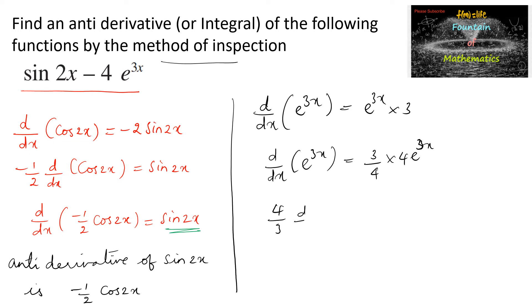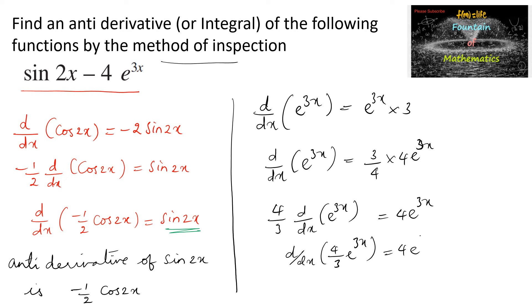So 4 by 3 times d/dx of e^(3x) is equal to 4e^(3x), which can also be written as d/dx of (4 by 3) e^(3x) equals 4e^(3x). This means the anti-derivative of 4e^(3x) is 4 by 3 e^(3x).